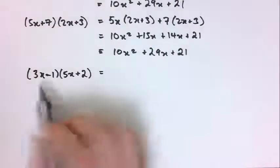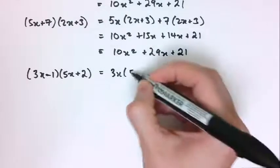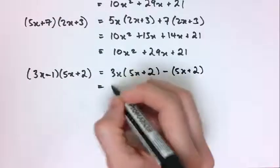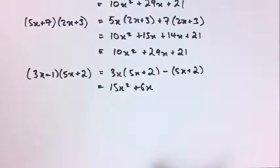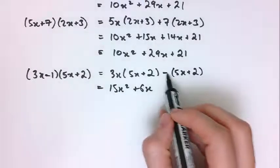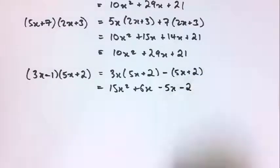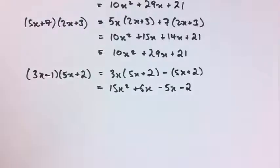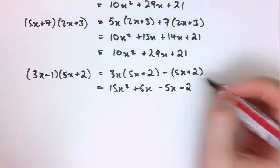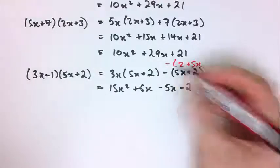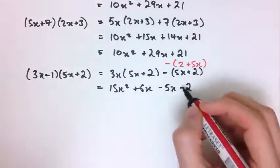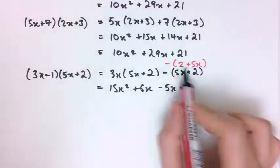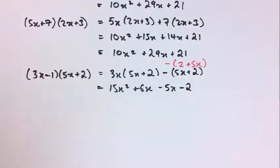You have to be careful when there are minus signs. For (3x - 1)(5x + 2): I have 3x lots of (5x + 2) minus 1 lots of (5x + 2). That gives 15x squared plus 6x. The most common mistake is not handling the minus outside the bracket properly — it gives minus 5x minus 2, not minus 5x plus 2. That minus applies to the whole bracket. Think of it this way: (5x + 2) is the same as (2 + 5x), so the minus must go into both the 2 term and the 5x term.